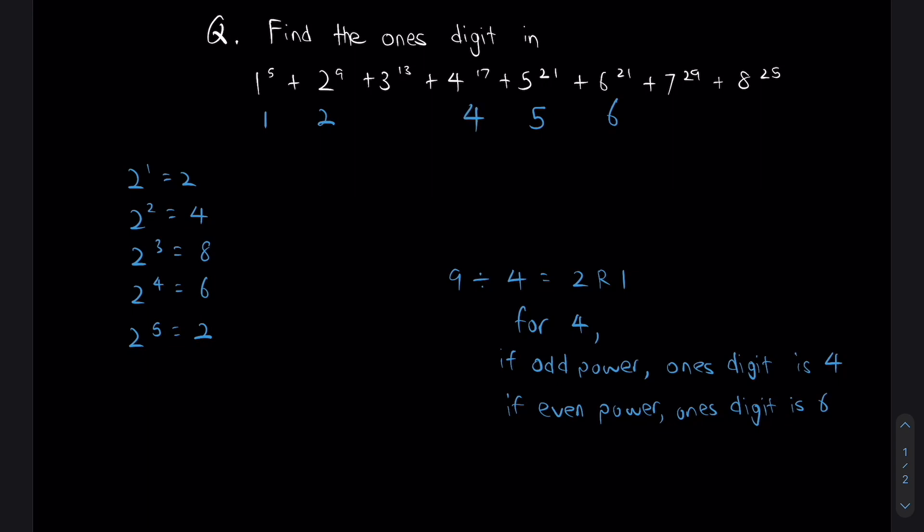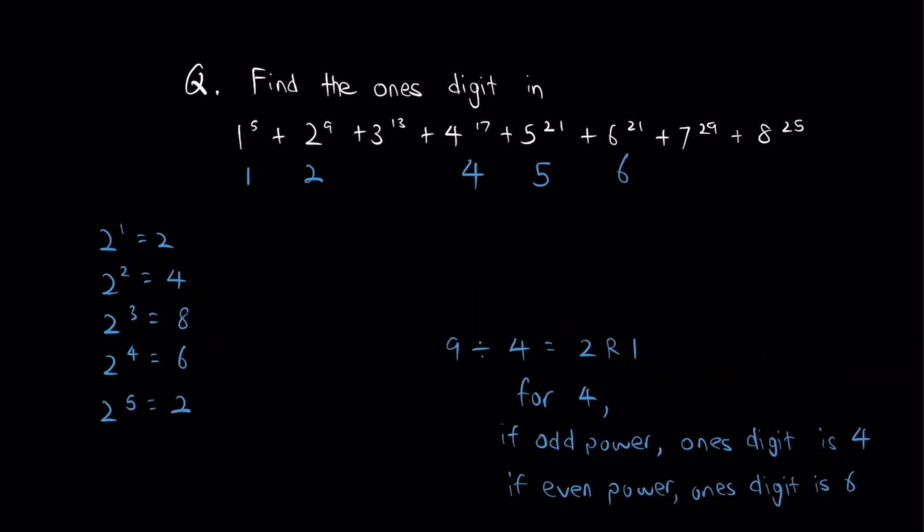Now if you look at the numbers we have so far, there seems to be some pattern emerging, right? For 1 to the power of something, our ones digit is 1. For 2 to the power of something, our ones digit is 2. So what do you think the ones digit for 3 to the power of 13 is? I mean, if we were to make a smart guess over here, we would probably say 3, right?